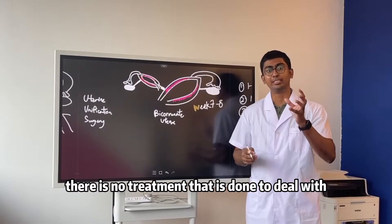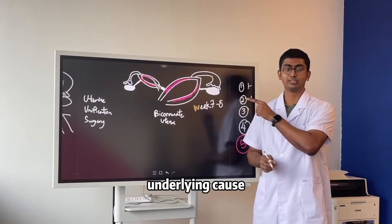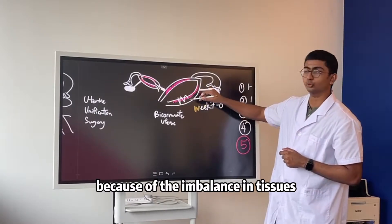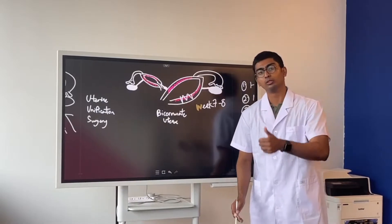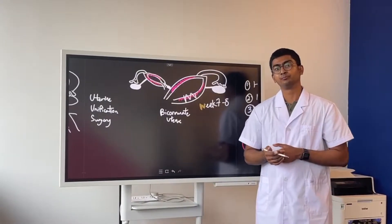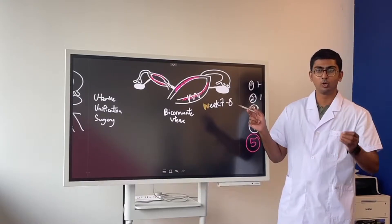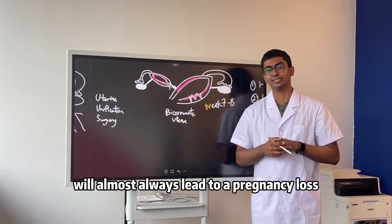There is no treatment that is done to deal with the underlying cause because of the imbalance in tissues, very poor blood vessels leading to poor uterine delivery. Poor types of uterine malformations, if not treated, will almost always lead to a pregnancy loss.